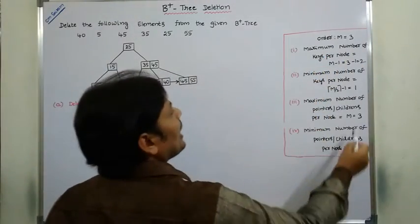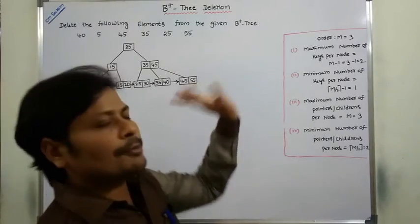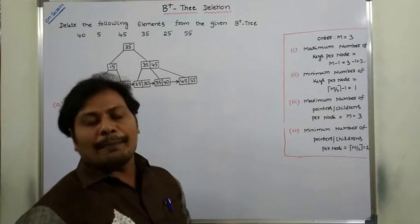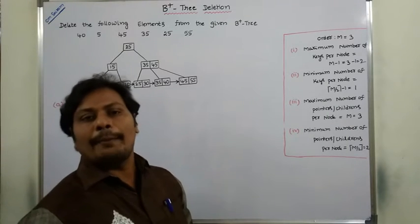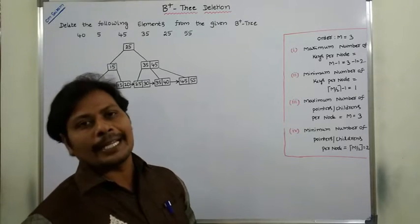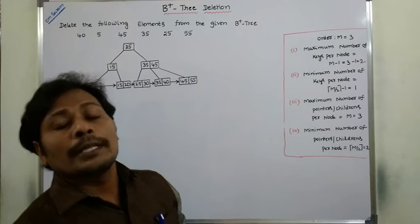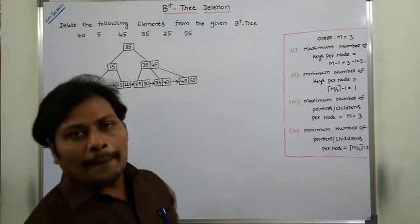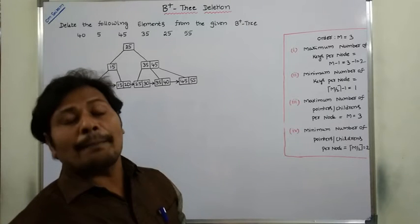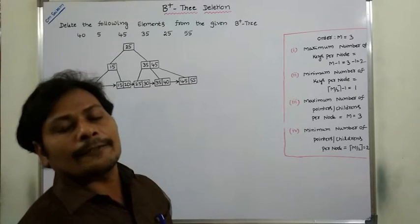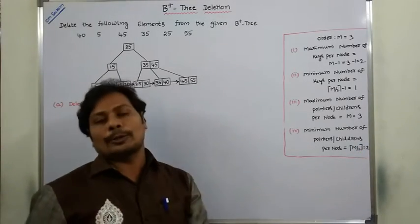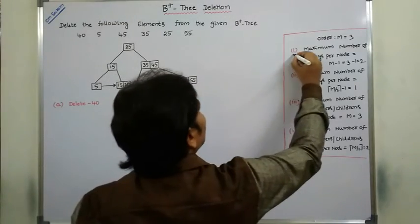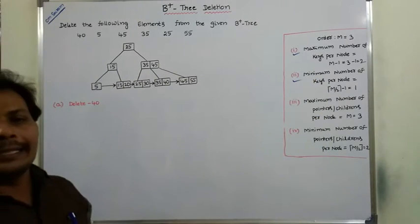These are the points to keep in mind while performing the deletion operation. The maximum number of key elements for a node is equal to m minus 1, that is 3 minus 1, which equals 2. The minimum number of key elements for a node is ceiling(m/2) minus 1, which is 1. Maximum number of pointers for a node equals m, that is 3. Minimum number of pointers equals ceiling(m/2), that is 2.